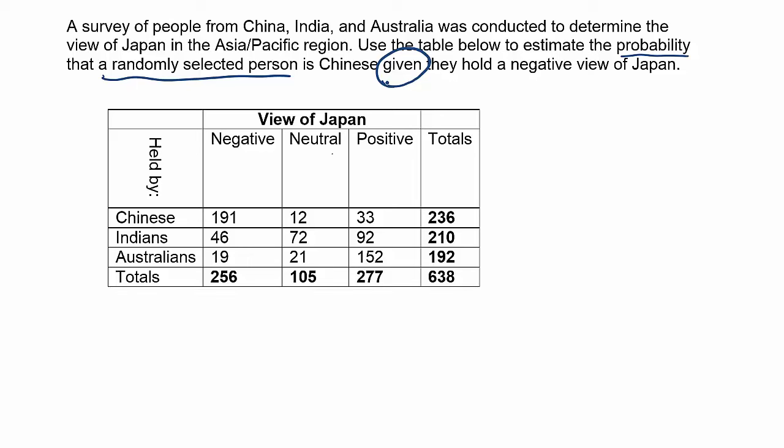First of all, it's a probability. Secondly, we're only taking one item from the population at random. And then we have this classic word 'given' — it could also say 'given that', 'assuming that', etc. Those are all examples where they're hinting that we should use conditional probability.